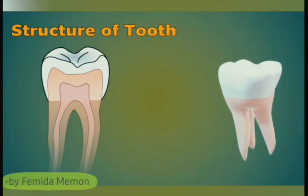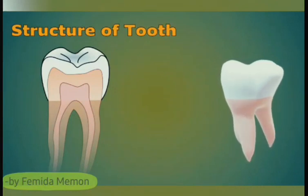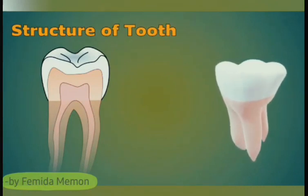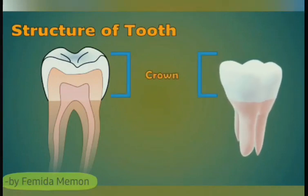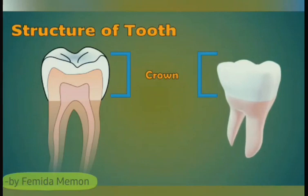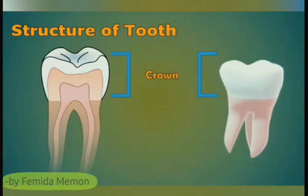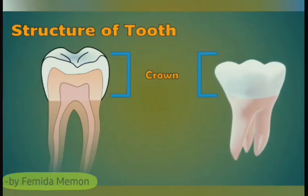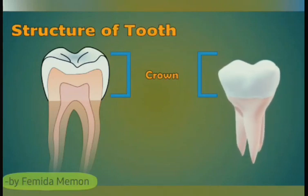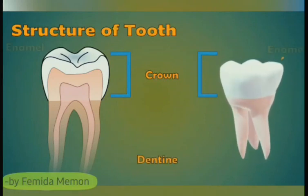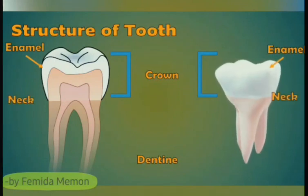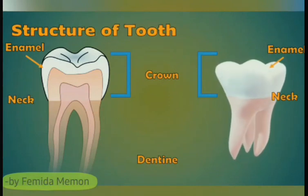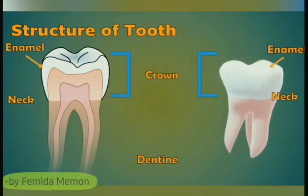Structure of a tooth: Teeth are fixed in gums that are embedded in the jaw. Each tooth has three parts. Crown: the shining white part of the tooth that you see is the crown. The teeth are made up of a hard bony substance called dentine; the shiny outer part is called enamel. Neck: the part of the tooth covered by the gum is called the neck. Root: the part of the tooth embedded in the bony socket is called the root.